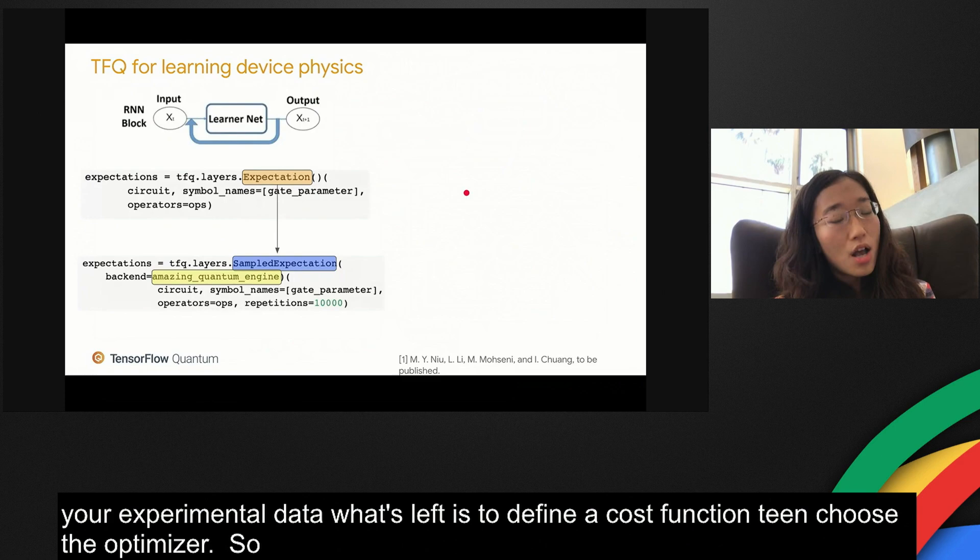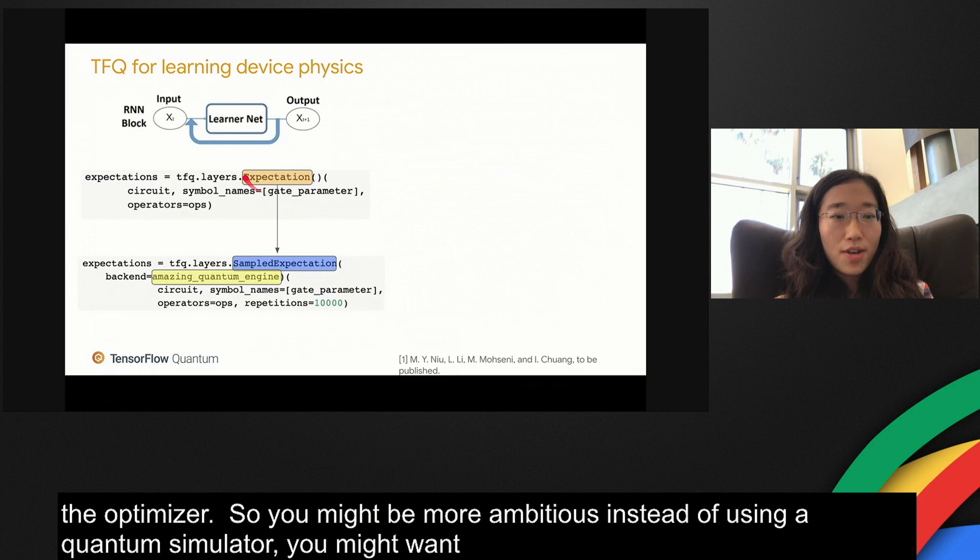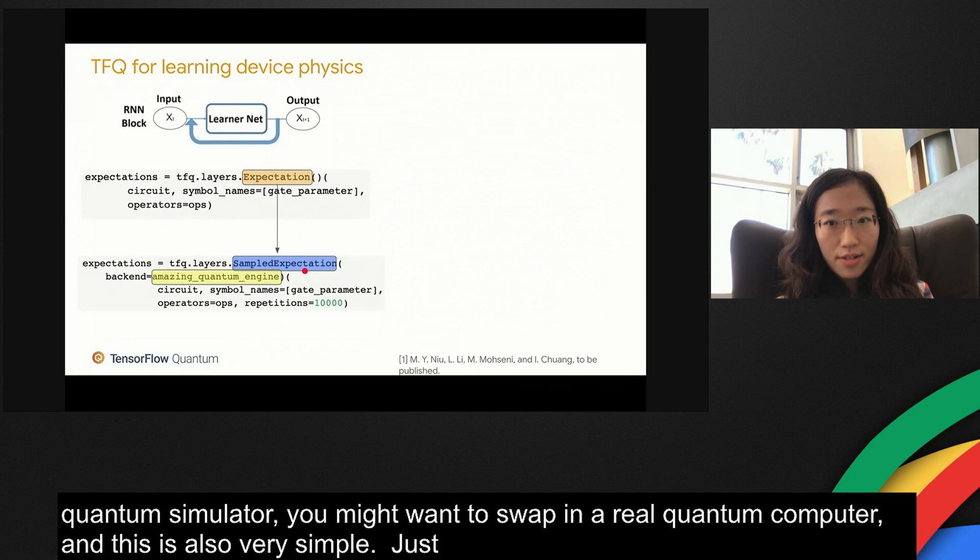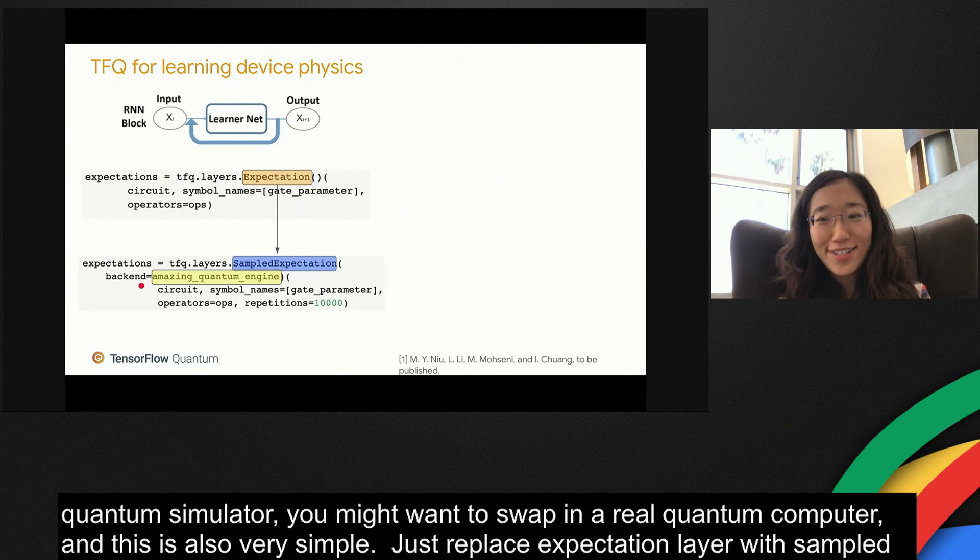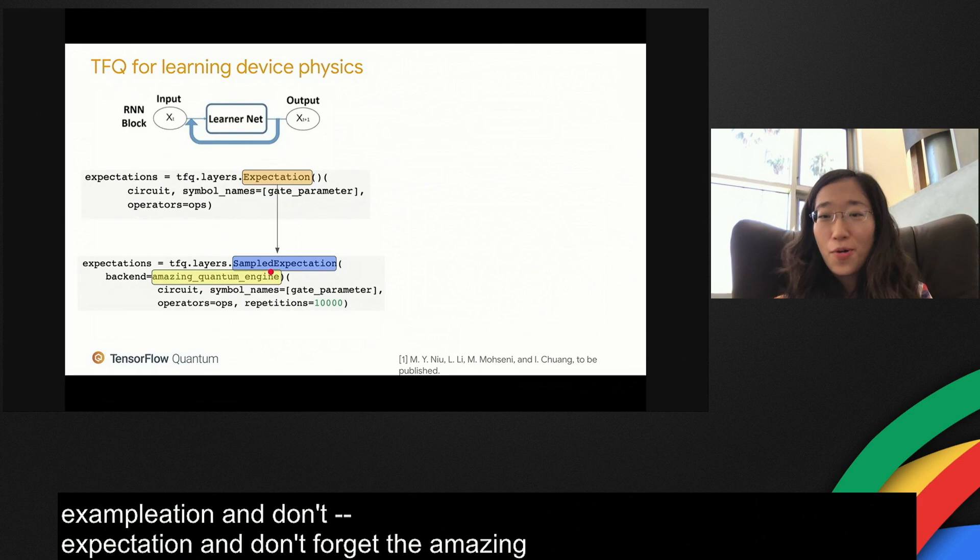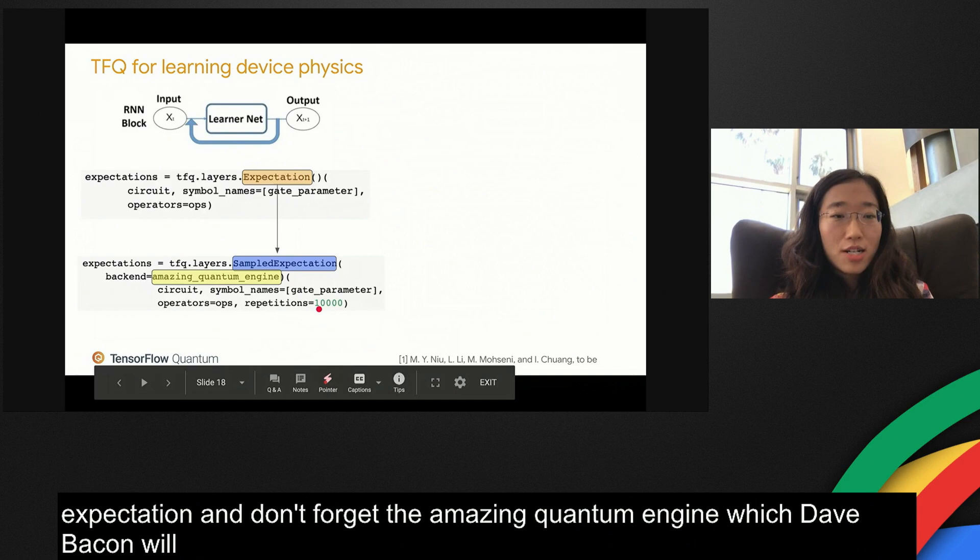You might be more ambitious. Instead of using a quantum simulator, you might want to swap in a real quantum computer. This is also very simple. Just replace an expectation layer with sampled expectation. Don't forget to choose your backend to be the amazing quantum engine, which Dave Bacon will talk more about and probably give you some free quota if you ask. And specify the number of repetitions of the measurement of each circuit.